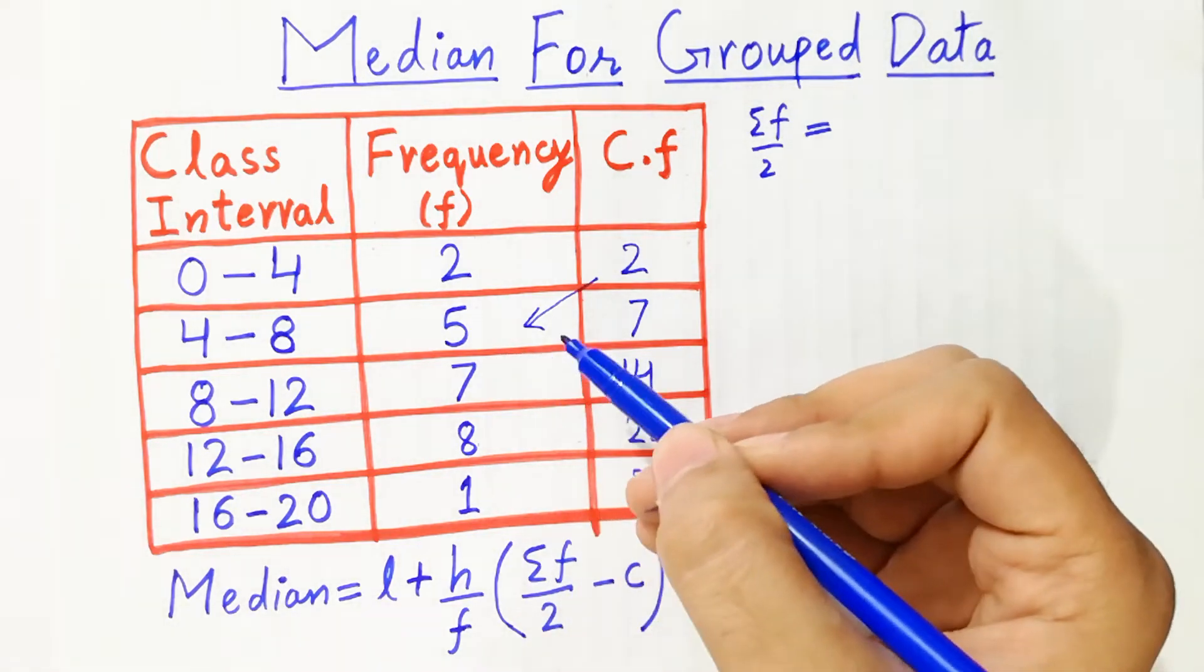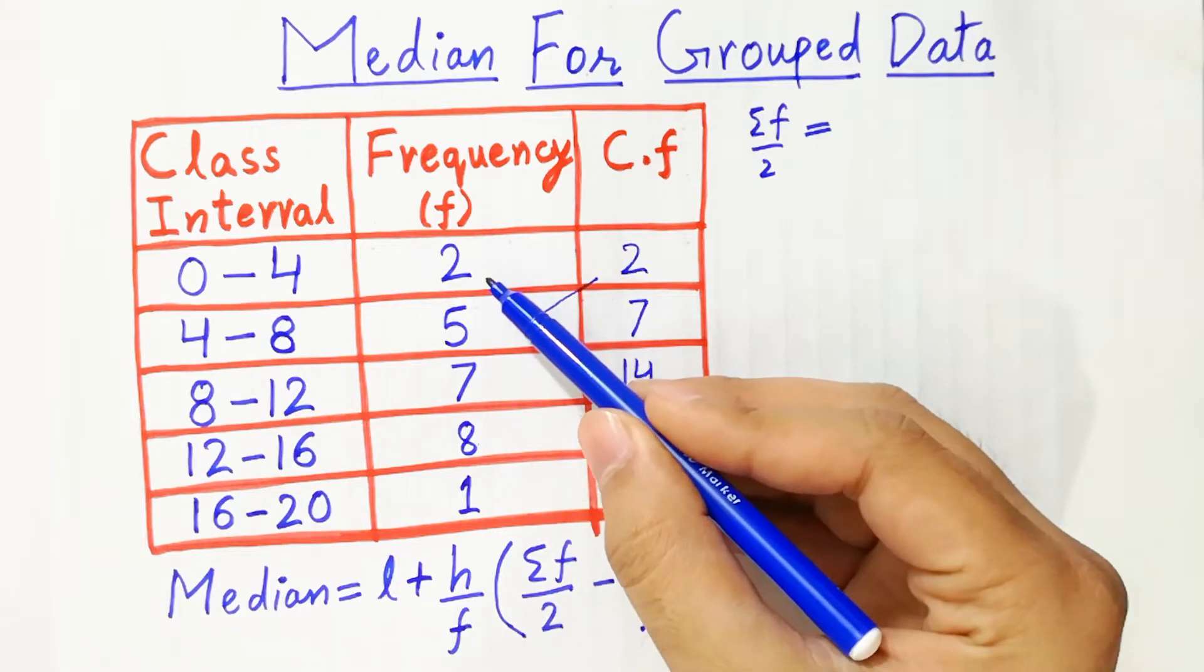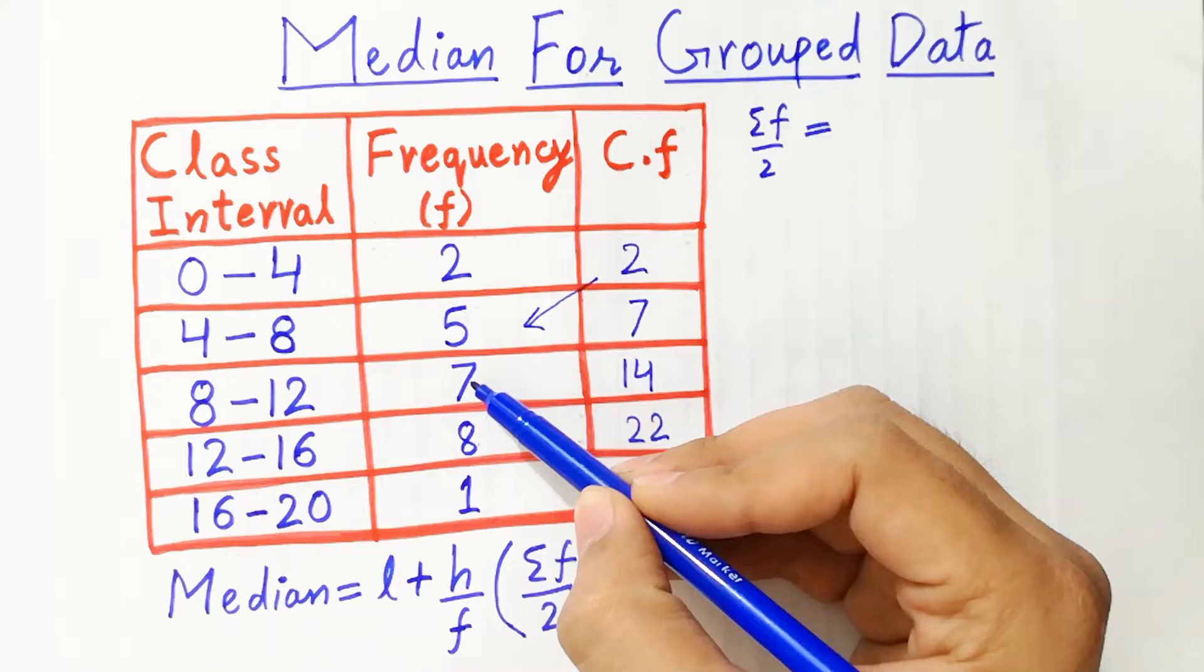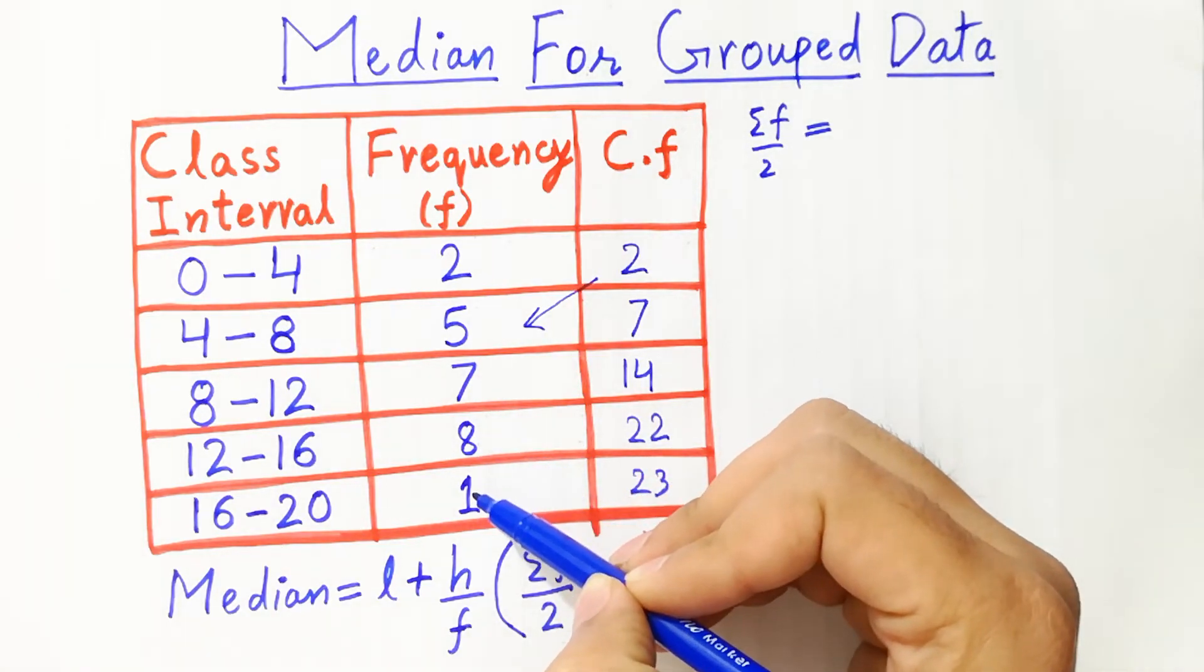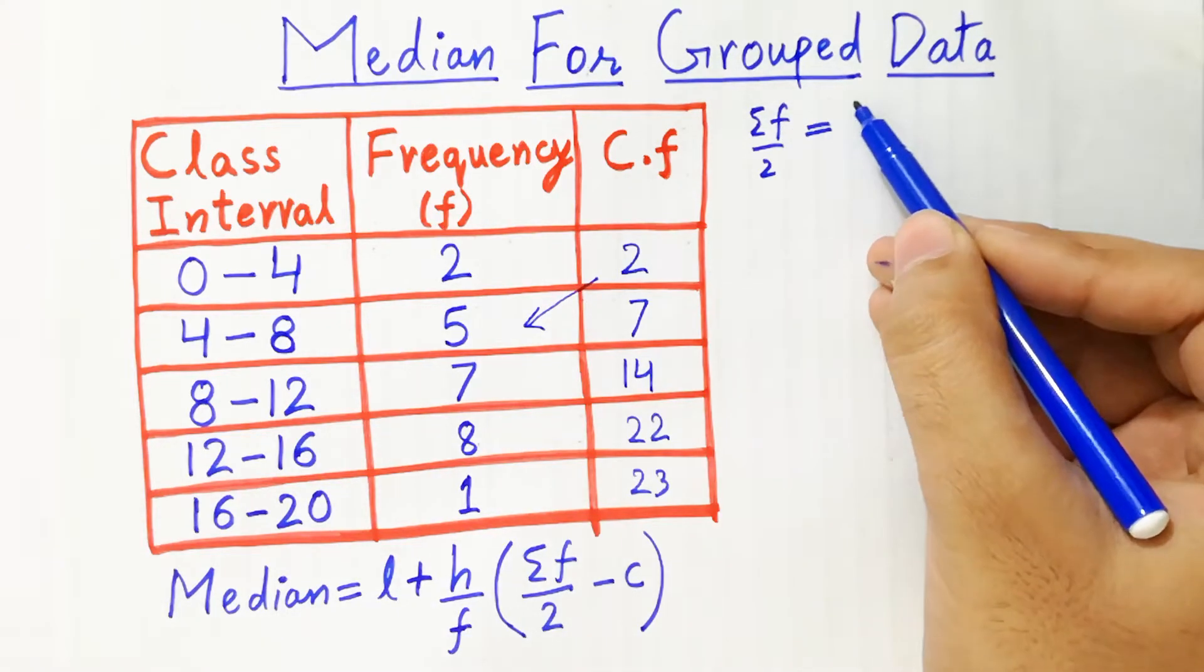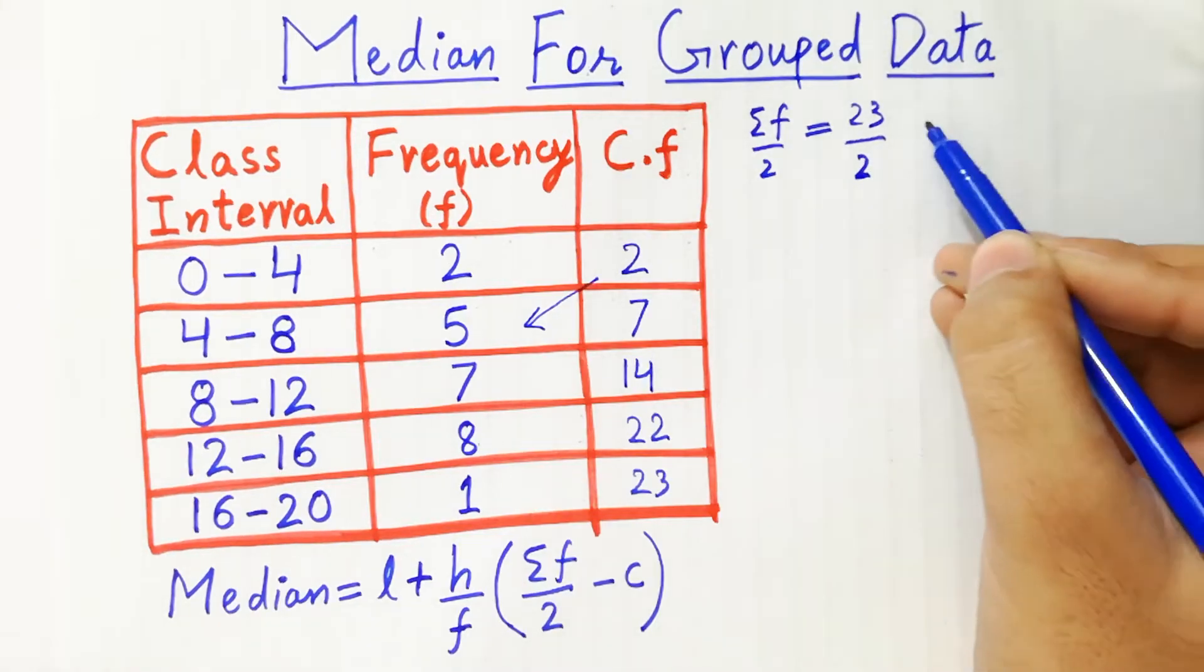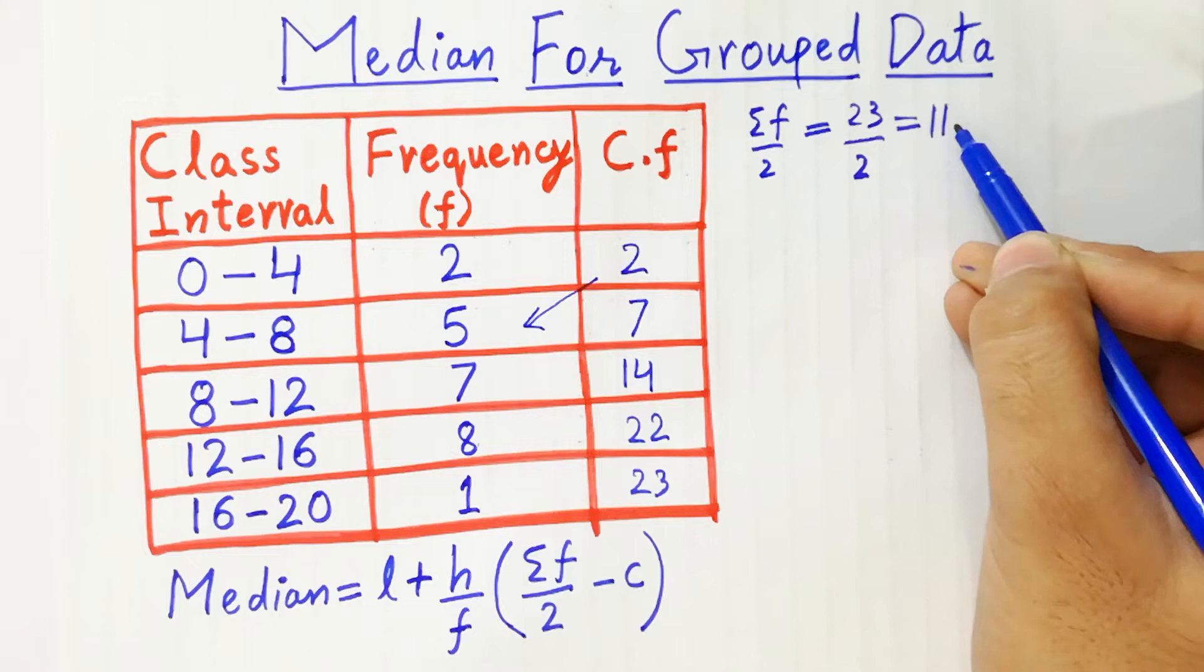For summation f, you have to add the values here: 2 plus 5 is 7, 7 plus 7 is 14, 14 plus 8 is 22, 22 plus 1 will be 23. So summation f value is 23 divided by 2, which will be equal to 11.5.